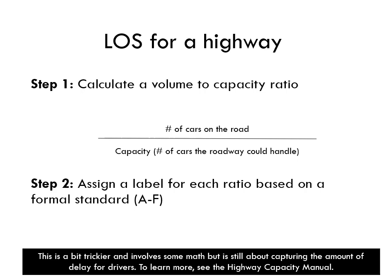Let's shift gears to talking about LOS for highways. This is a two-step process. First, we're going to calculate a volume-to-capacity ratio. That sounds complicated — it's not. It's just the number of cars on the roadway divided by the capacity of the roadway — that's the number of cars the roadway is designed to handle.